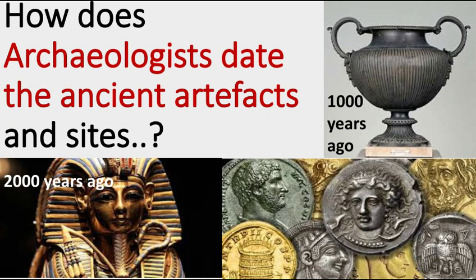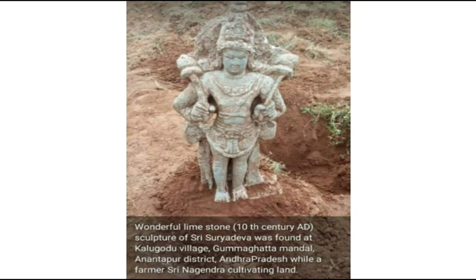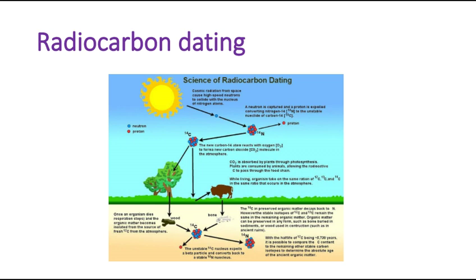Archaeologists use a process called radiocarbon dating. Radiocarbon means C14. C14 is present in everything, so if we stop using a thing, then the C14 present in that thing will start decaying at a uniform rate. By measuring the loss of C14, we are able to measure the age of the thing.